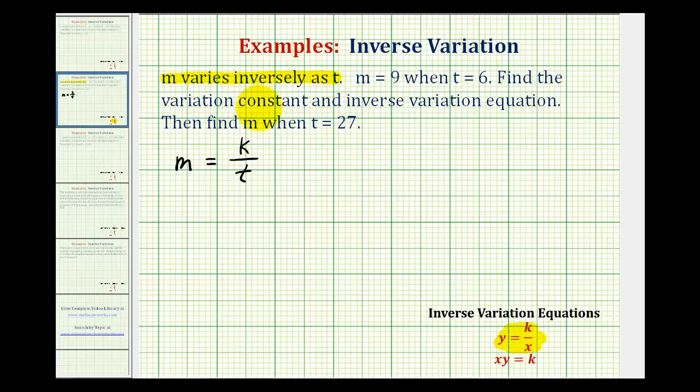So to find the variation constant, we'll substitute nine for m and six for t to solve for k. So we'd have nine equals k divided by six.